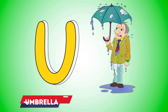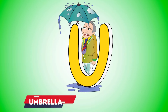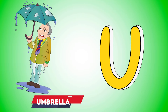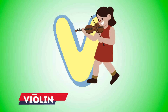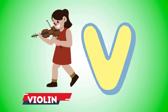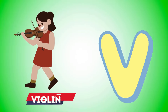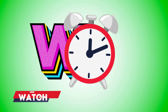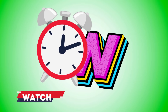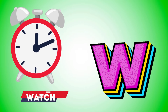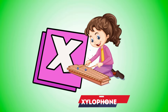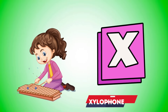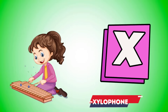U is for umbrella, u-u-umbrella. V is for violin, v-v-violin. W is for watch, w-w-watch. X is for xylophone, z-z-xylophone.